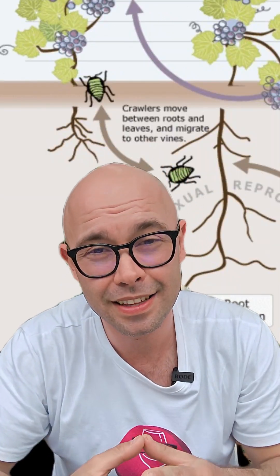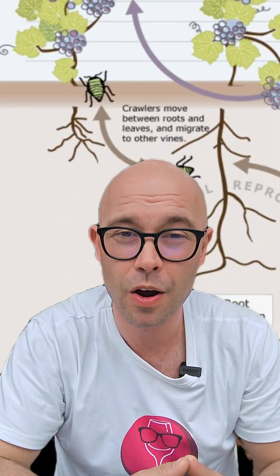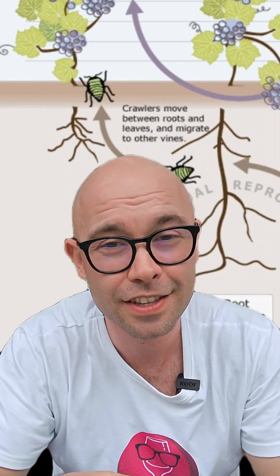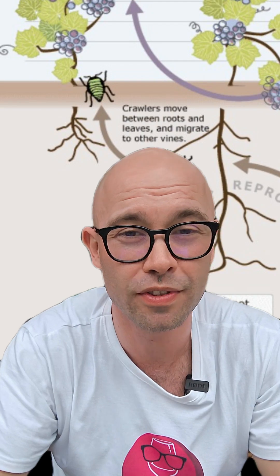Phylloxera has a very complex life cycle. At one point it lives on the ground and feeds on the roots of the vine plant. The problem is Vitis vinifera — the grapes and vines that we use for winemaking — is not resistant against phylloxera.